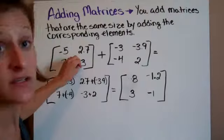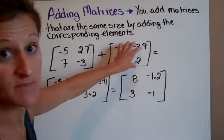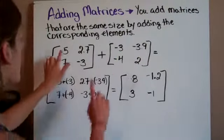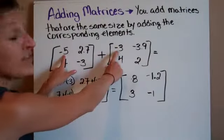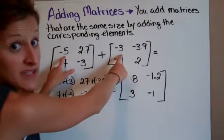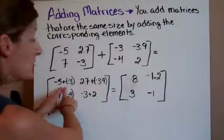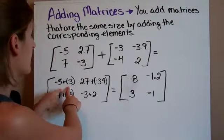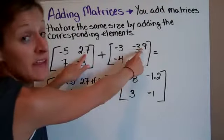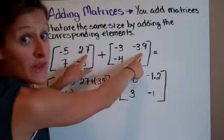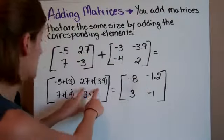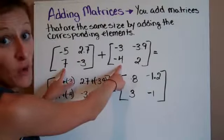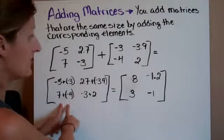If I have this matrices plus this matrices, what I'm going to do is take negative 5 and 3. They're in the same spot in each matrices, so I'm going to add those together. So negative 5 plus negative 3. The 2.7 and the negative 3.9 are in the same spot, so I add those two together. The 7 and the negative 4 are in the same spot, and I add them.